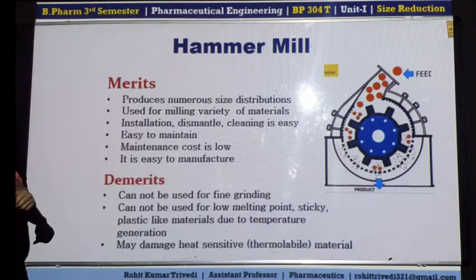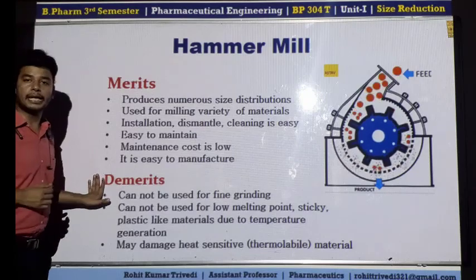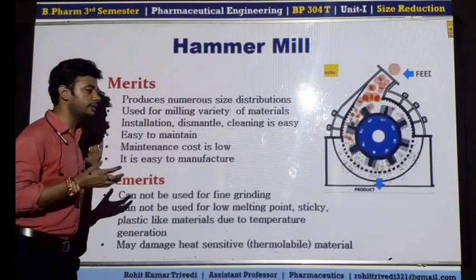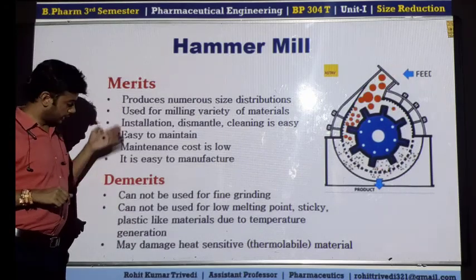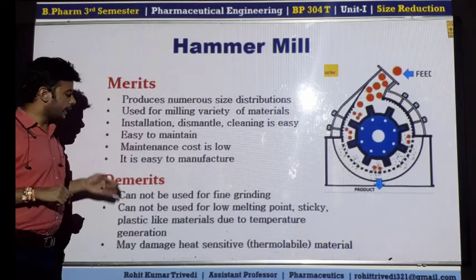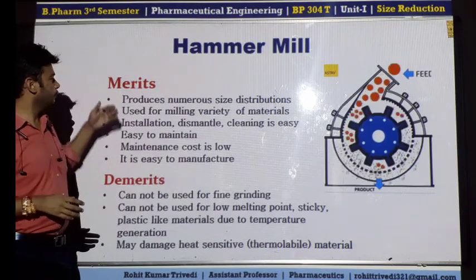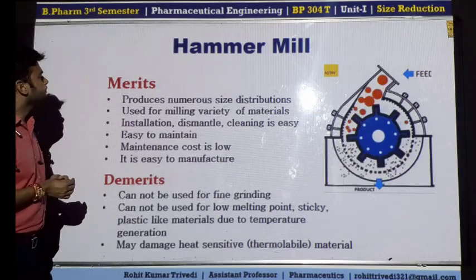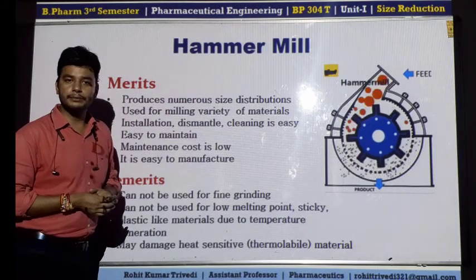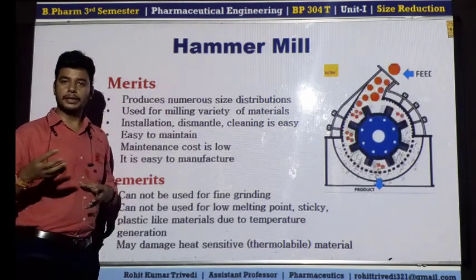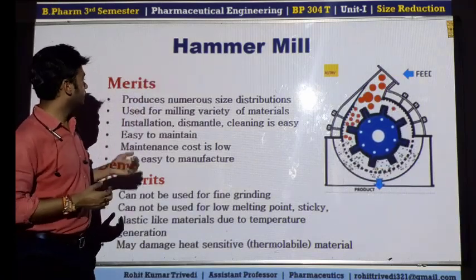Now let's discuss the merits and demerits of the hammer mill. Obviously when studying any pharmaceutical machinery, there are certain merits but certain demerits too. The very first merit is that the hammer mill produces numerous size distributions — meaning a variety of particle size materials can be obtained using the hammer mill. That is a major advantage.